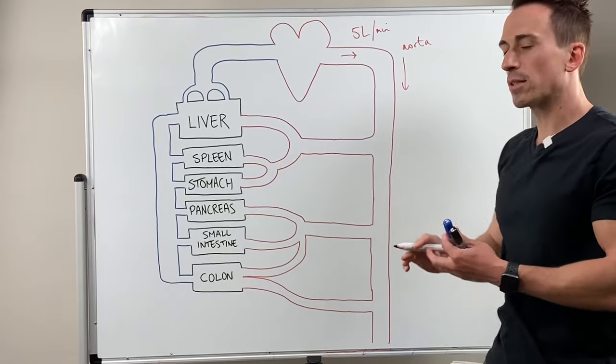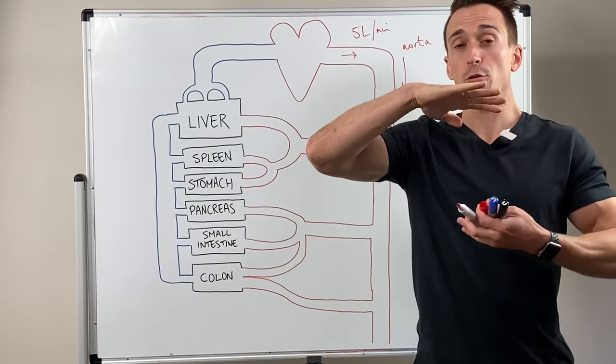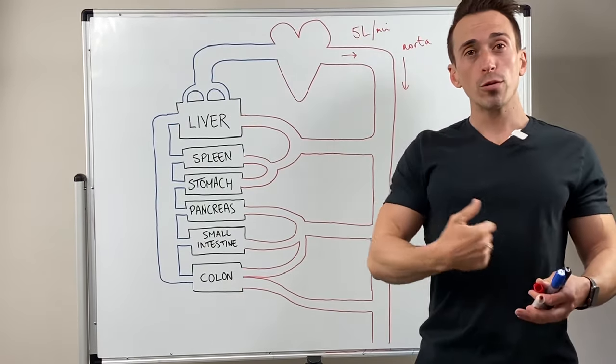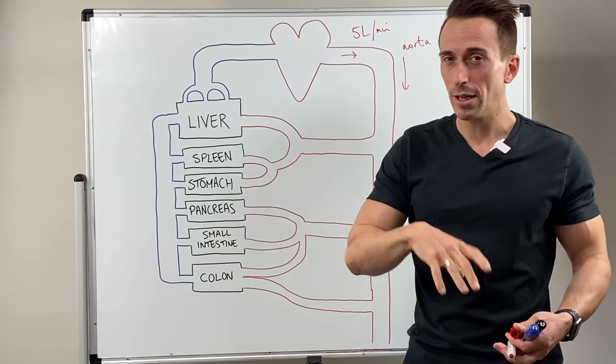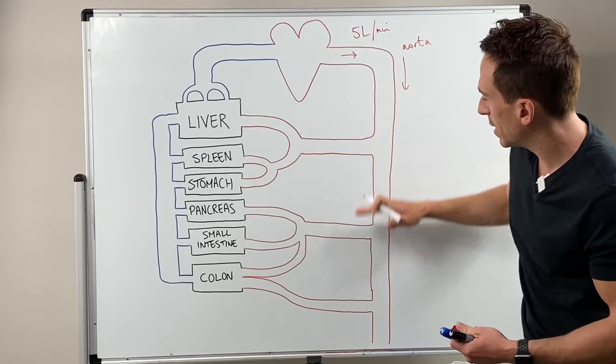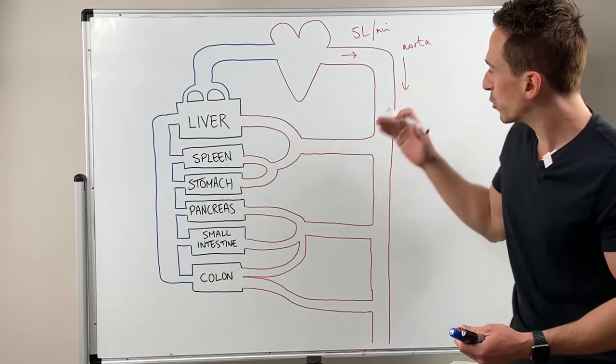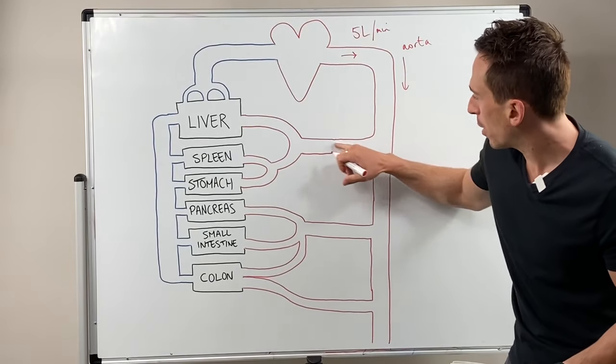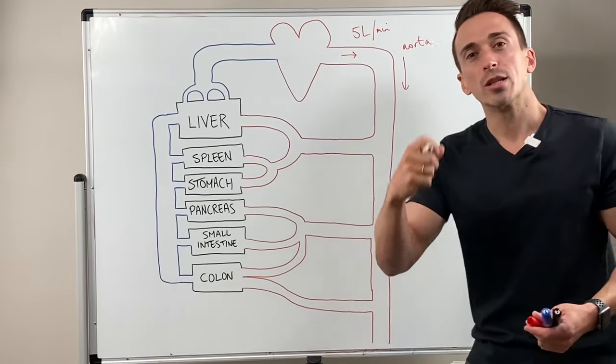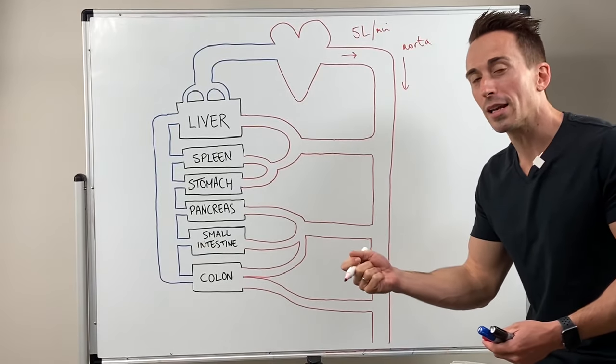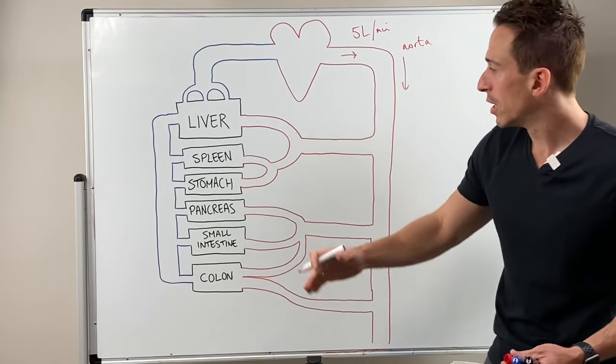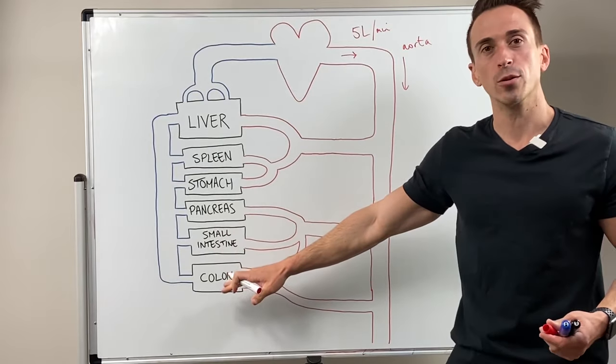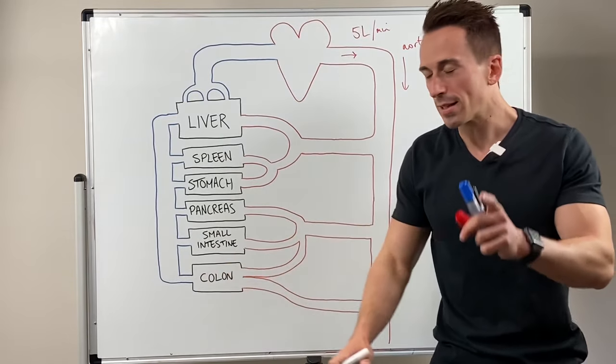Now as the aorta descends, it's going to descend down through the thoracic cavity, move through the diaphragm into the abdominal cavity. What we find once we're in the abdominal cavity and we're looking at the abdominal aorta is there's a number of branches in which the blood supply from the heart is delivering oxygen and nutrients to various gastrointestinal tissues or structures. Let's have a look.